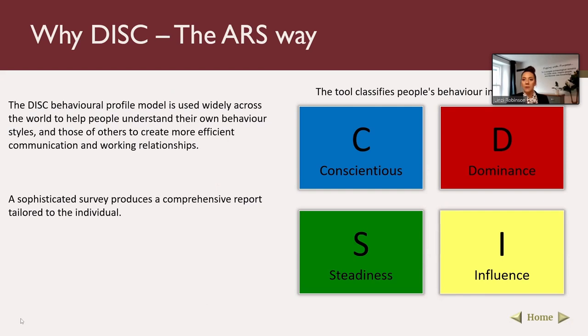Understanding an employee's DISC profile helps us put them in the best role. For example, if we've got employees who love talking and sharing knowledge about archaeology, they're probably a High I — so we'd use them to their advantage by having them talk to schools, bringing finds, and getting children and volunteers engaged and interacting. Whereas a High C would find that way out of their comfort zone, so it's about using each person's strengths to the team's advantage.